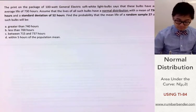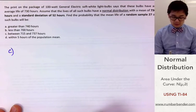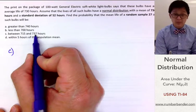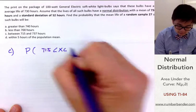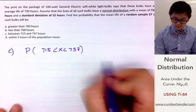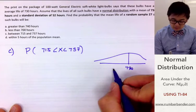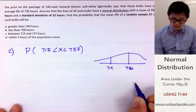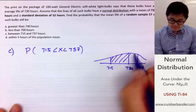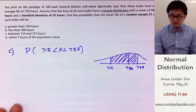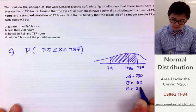For letter C, we need to find the probability that the mean lifespan is between 715 hours and 737 hours — that is, P(715 < X̄ < 737). On our normal curve, the mean is 730, with 715 somewhere to the left and 737 somewhere to the right. We want to find the area under the curve between those two values, with mu = 730, sigma = 52, and sample size still 27.